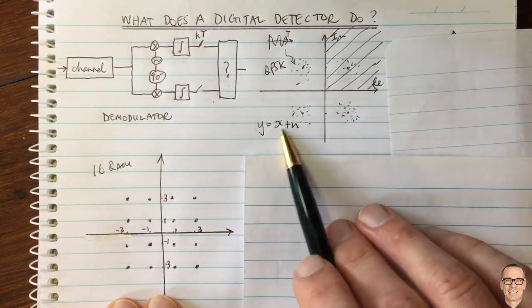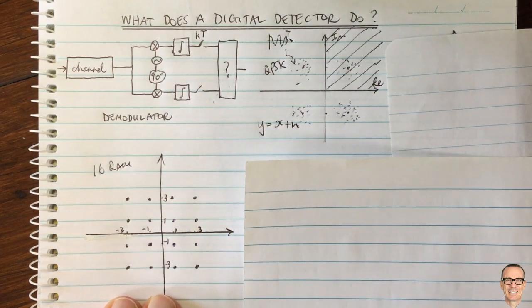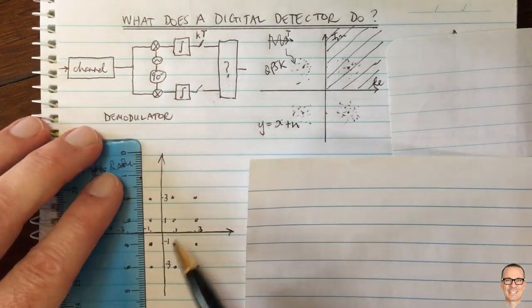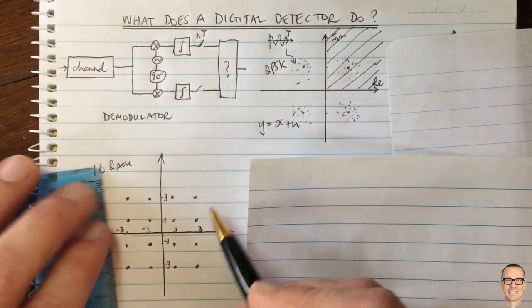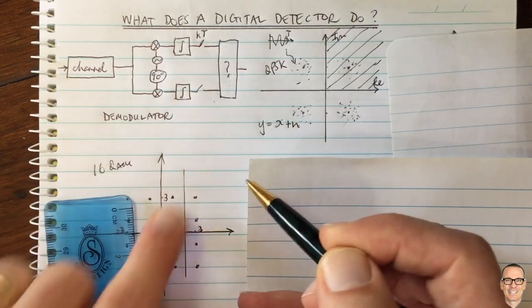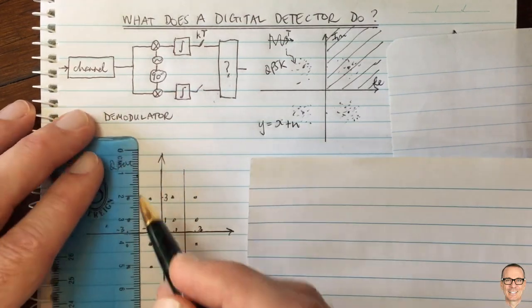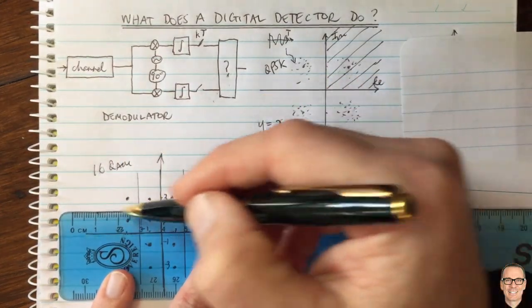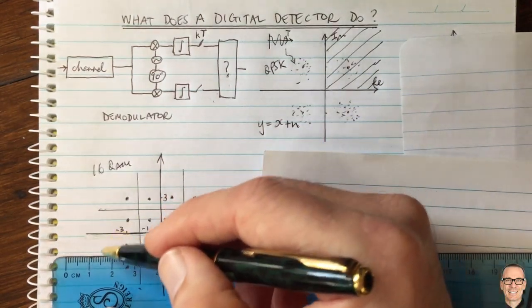In 16 QAM there are more decision boundaries. You need to put the boundaries halfway between points. There'll be a decision boundary vertically between rows of points, a decision boundary along the axes, and decision boundaries between points at half distance. There are also horizontal decision boundaries along this axis and between these points.